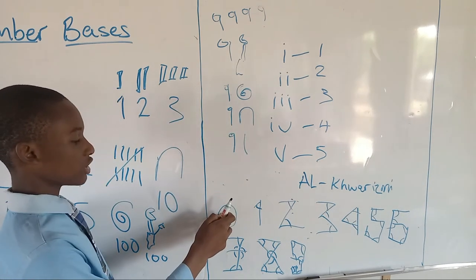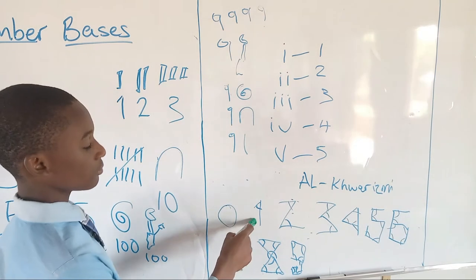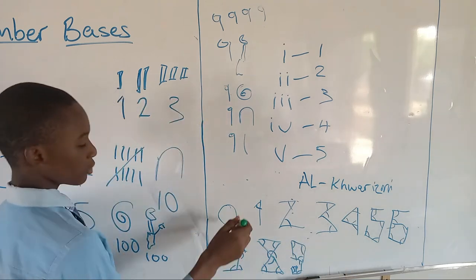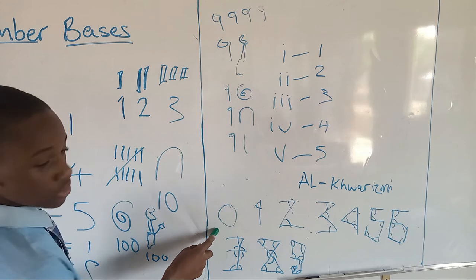This is the normal counting system we use today, from zero to nine. With these numbers, any other numbers can be formed. And from these numbers, other mathematical teachers found the way other bases were used today.